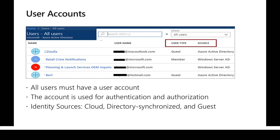There are normally three types of user accounts available with Azure Active Directory. One is the cloud-native Azure Active Directory account, meaning we created those user accounts in Azure Active Directory. Another is directory synchronized — if a user already exists in on-prem AD and we have set up synchronization, those accounts will be synchronized from on-prem to Azure and tagged as directory synchronized accounts.